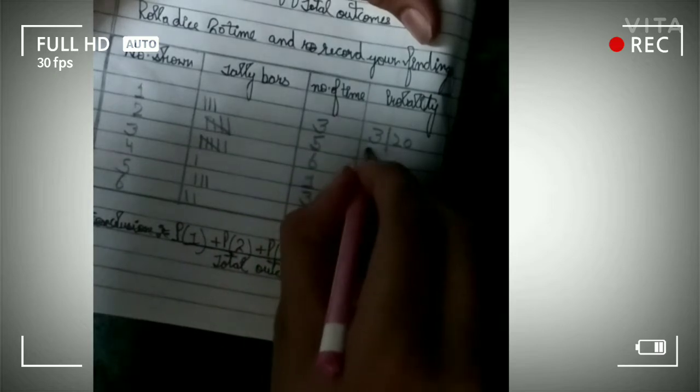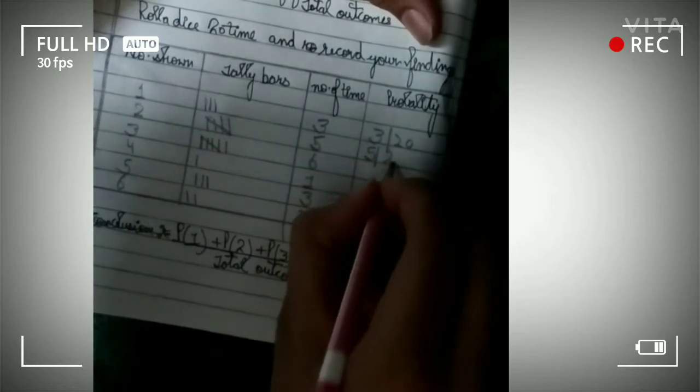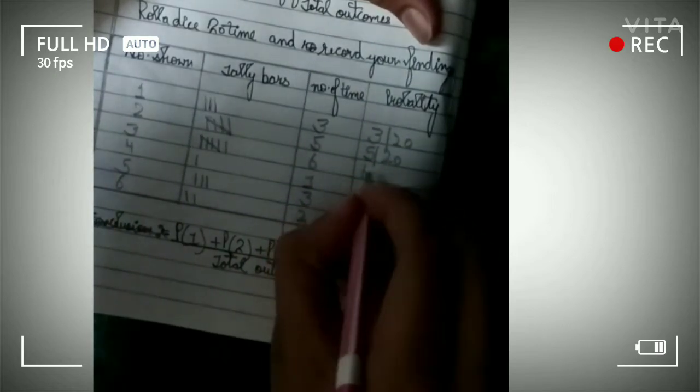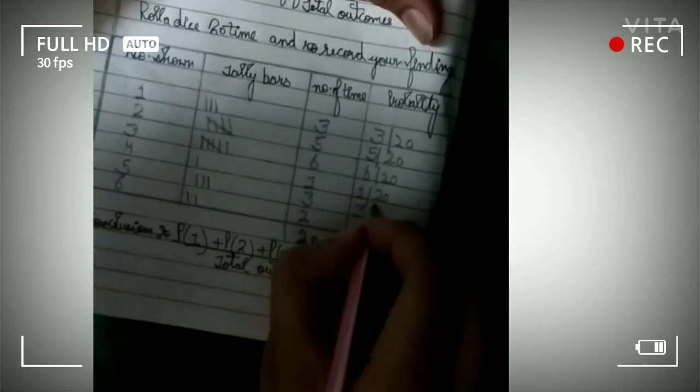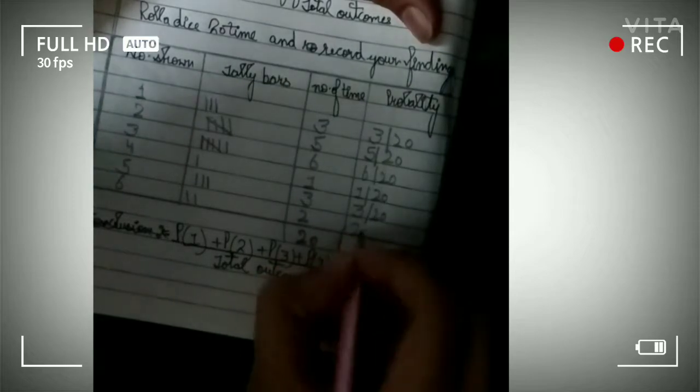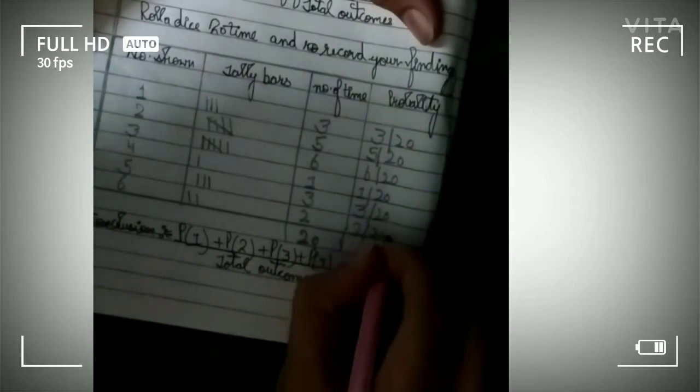Next favorable outcome is 5, so it will be 5 by 20. Next 6, 6 by 20. 1 by 20, 3 by 20, and last 2 by 20.